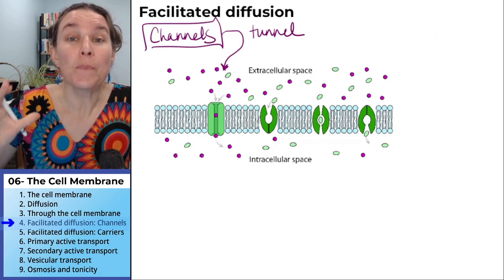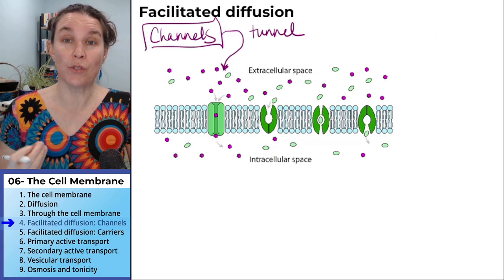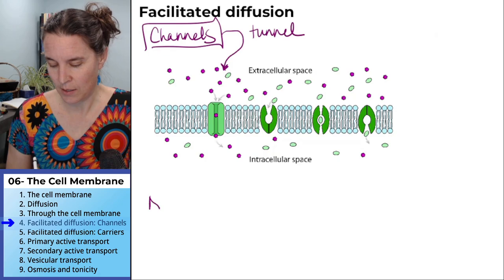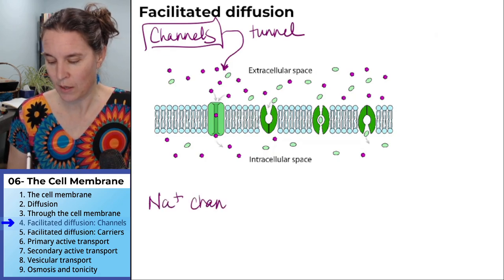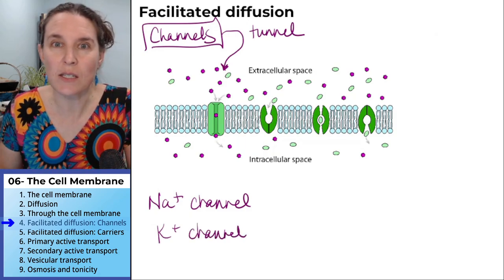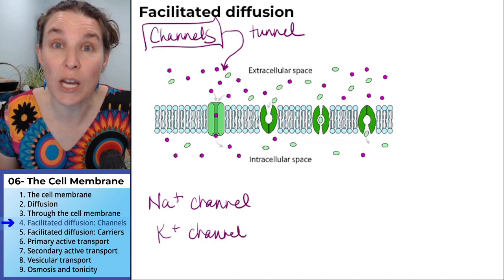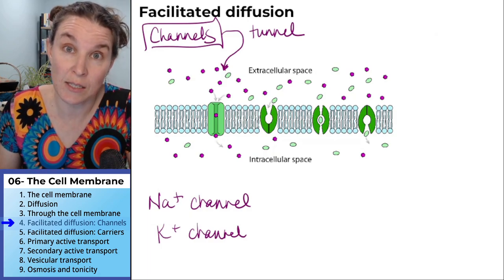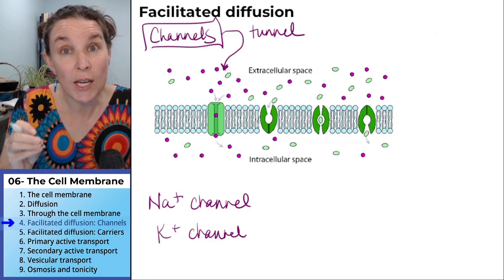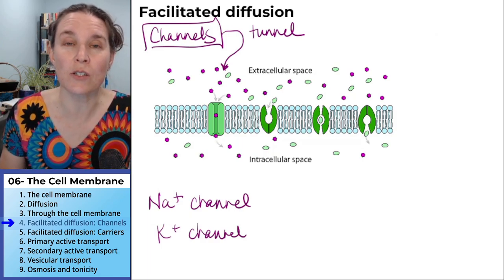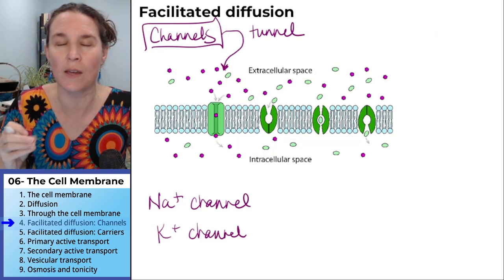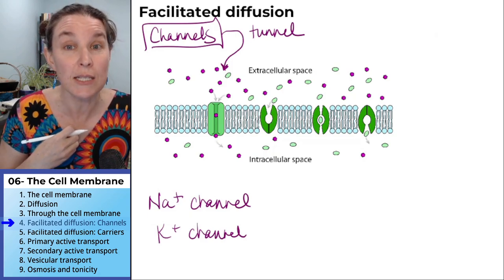Channels only allow certain molecules through. Examples include the sodium channel and the potassium channel. We also have calcium channels, glucose channels, and iodine channels — we have bajillions of different kinds of channels. Sodium and potassium channels are super interesting because they enable neural function. I'm talking to you now because of the amazing capacities of my sodium and potassium channels.